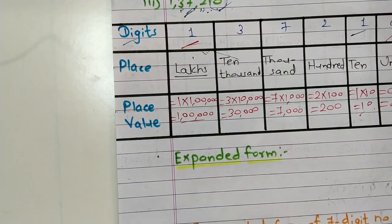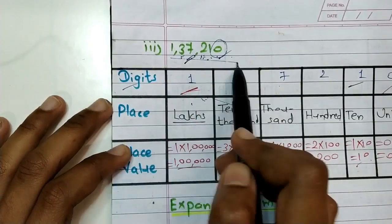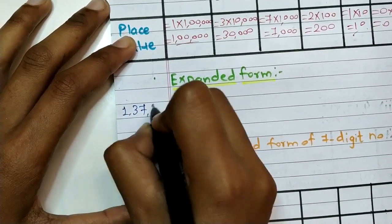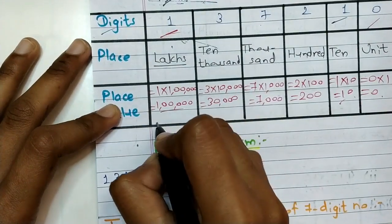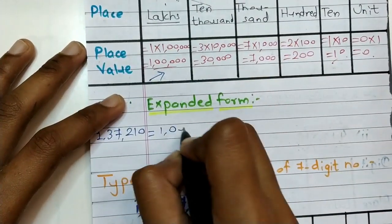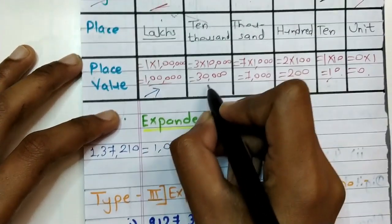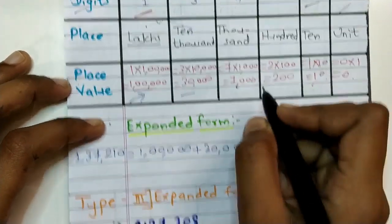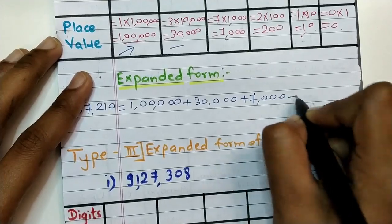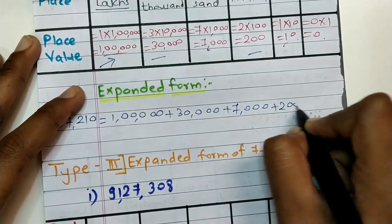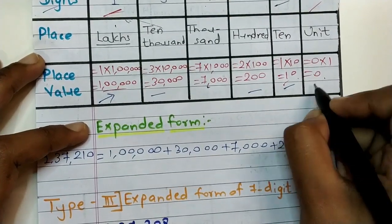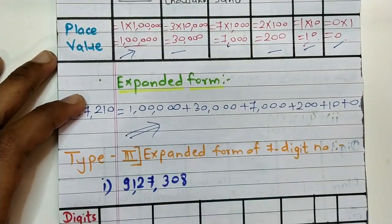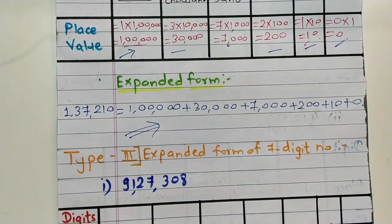Now we write the expanded form. The given number is one lakh thirty-seven thousand two hundred and ten. One lakh thirty-seven thousand two hundred and ten equals one lakh plus thirty thousand plus seven thousand plus two hundred plus ten plus zero. This is the required expanded form. Type two is over.